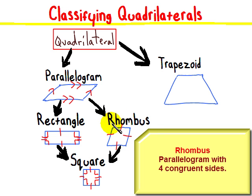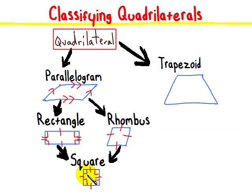And a special kind of rhombus is also a square. So a square is a parallelogram, a rhombus, and a rectangle. It's also a quadrilateral.